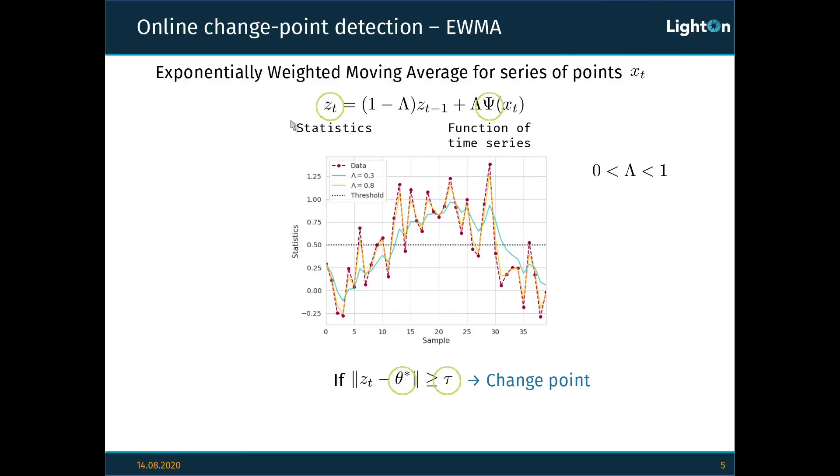The idea behind EWMA is we compute a statistic zt iteratively according to this formula, where lambda is a forgetting factor that basically says how much we weight the most recent points compared to the most ancient points, and a function psi of the time series that I will talk about more in the next slide. Having computed these statistics, we say that there is a changepoint once our statistics becomes too different from a certain in-control value. The problem of this method is that this in-control value and this threshold needs to be user-defined, and we have no way of knowing if some values that work well for a given data set will work well for another data set.